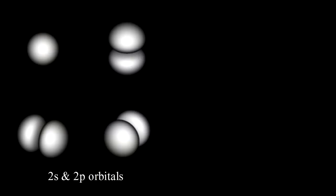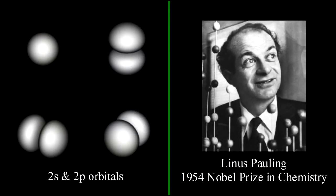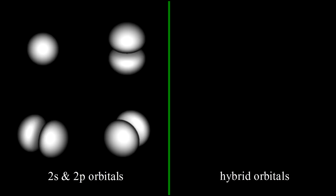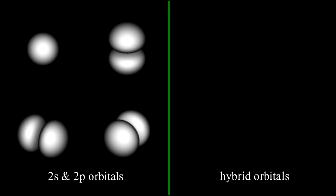But as was pointed out most notably by Linus Pauling, these hydrogen orbitals are stationary states with the same energy. Therefore, any combination of them will also be a stationary state with the same energy. These are so-called hybrid orbitals.